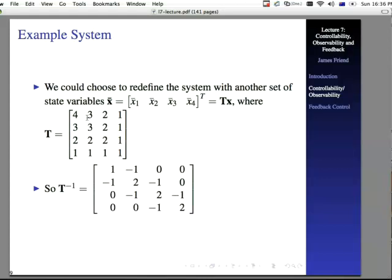So then T to the minus 1, if we invert that, ends up being as shown here. We have minus 1s down just the off diagonals, and then 1, and then a series of 3 2s down the diagonal itself, and 0s everywhere else.